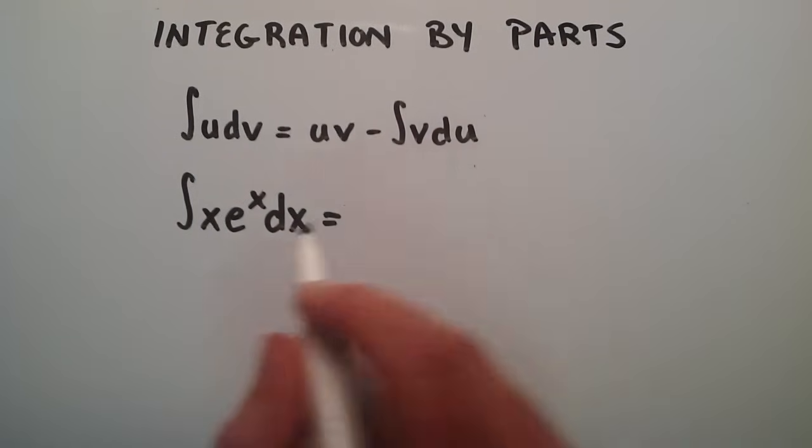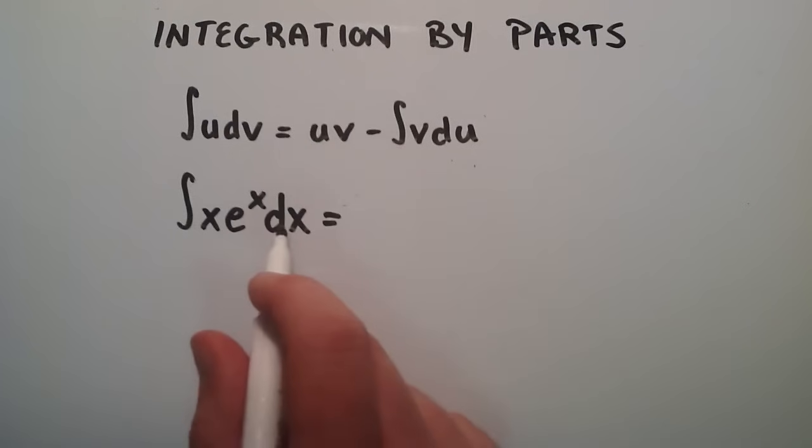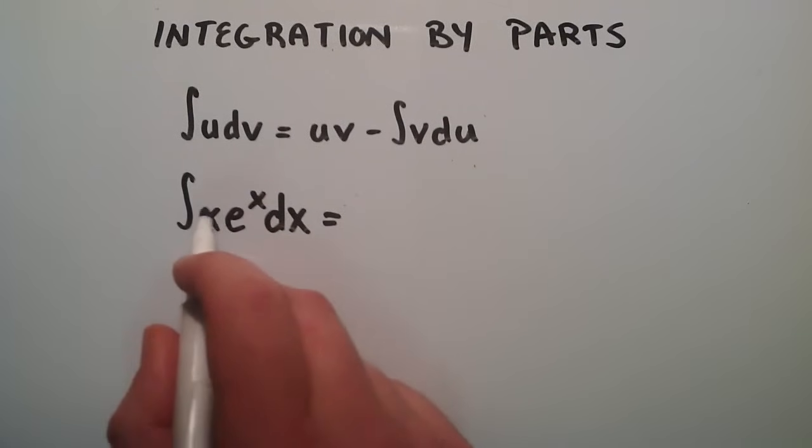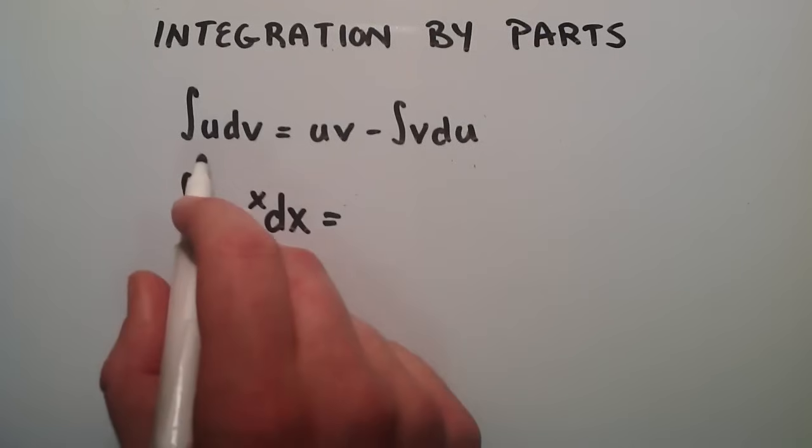We want to use integration by parts to do this. So what we have to do is label part of this u and the other part dv. Usually what we want to do is pick the part that will turn into a constant if we take the derivative enough times for our u.